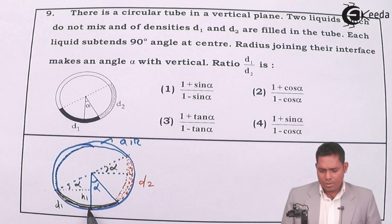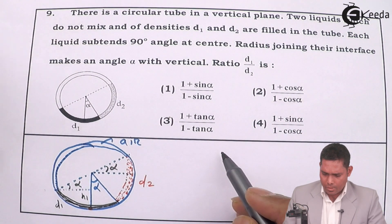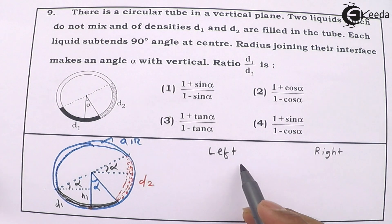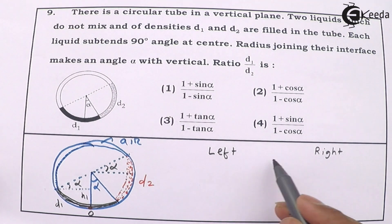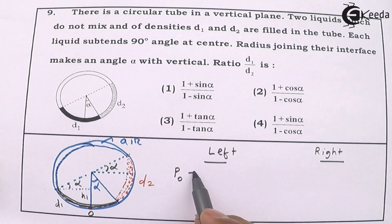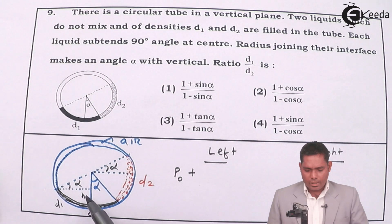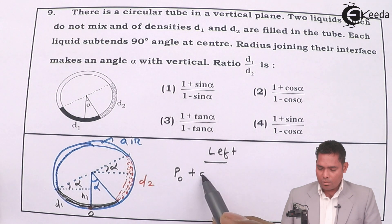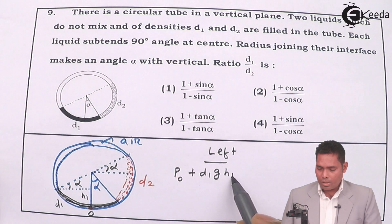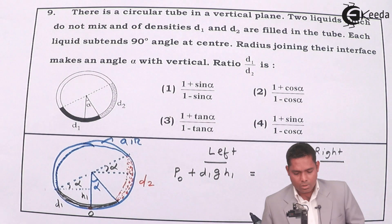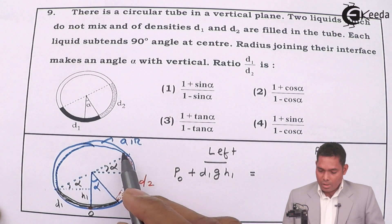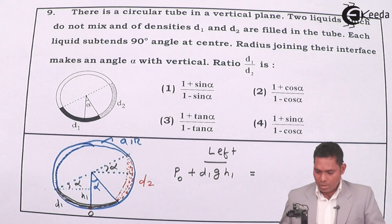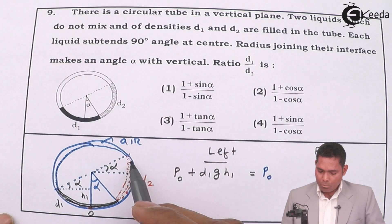I'll write one equation for the left side and one for the right side, then balance these two pressures. On the left: atmospheric pressure plus the height of this liquid column — density is d1, so it is d1 × g × h1 — must balance the pressure on the right-hand side. The right-hand side again has atmospheric pressure.